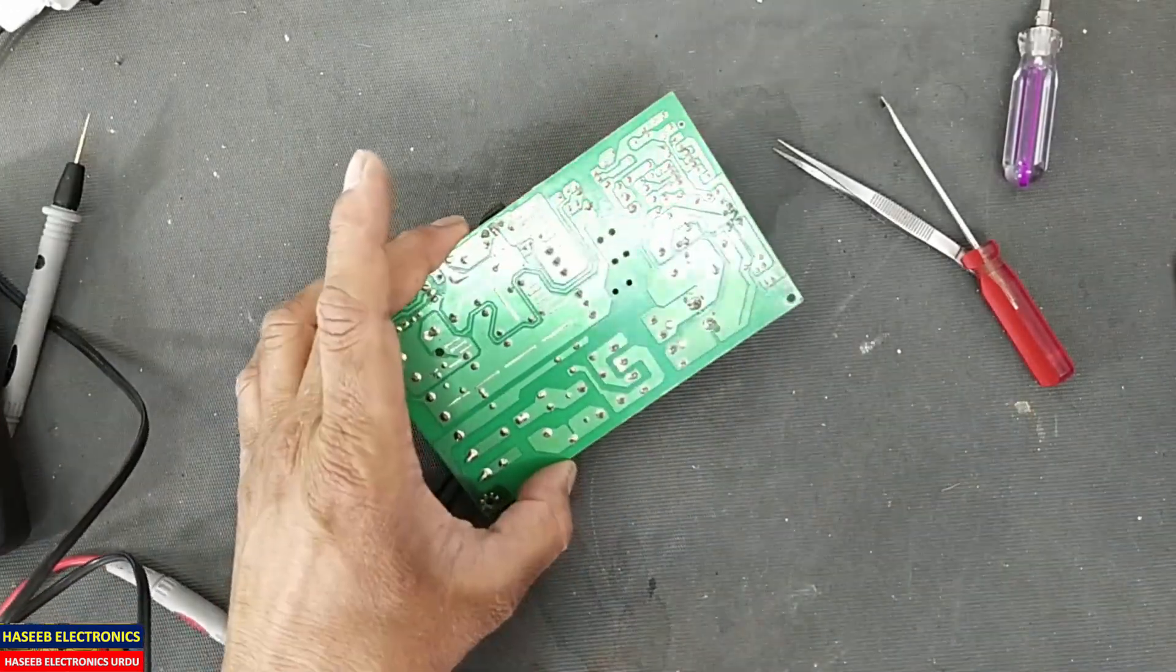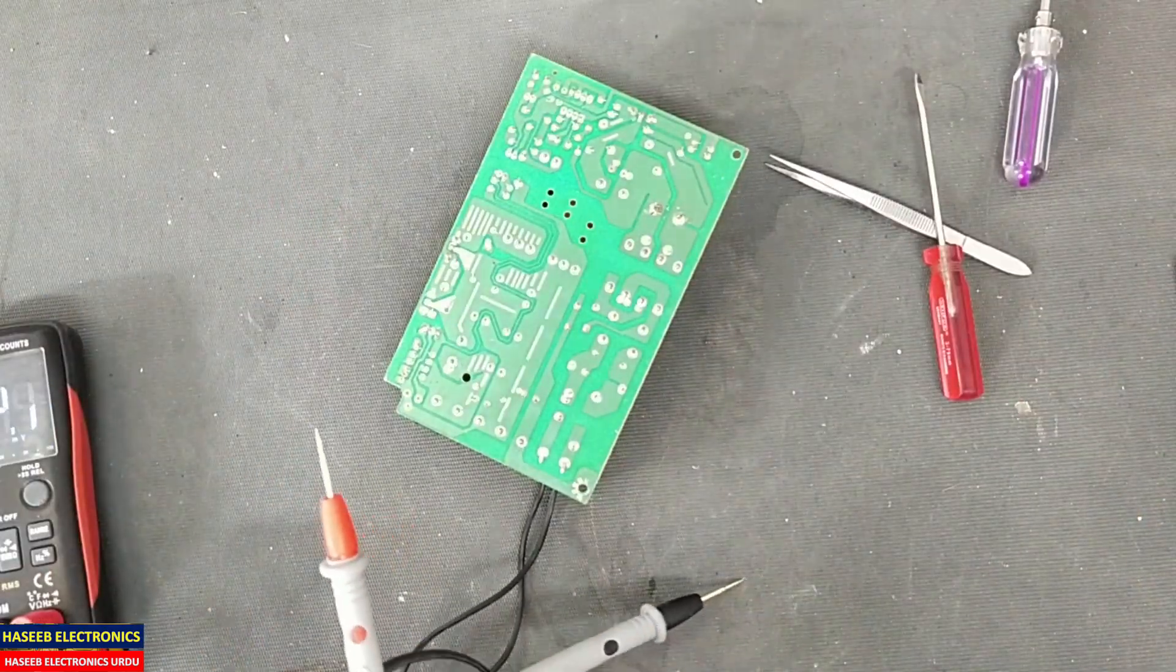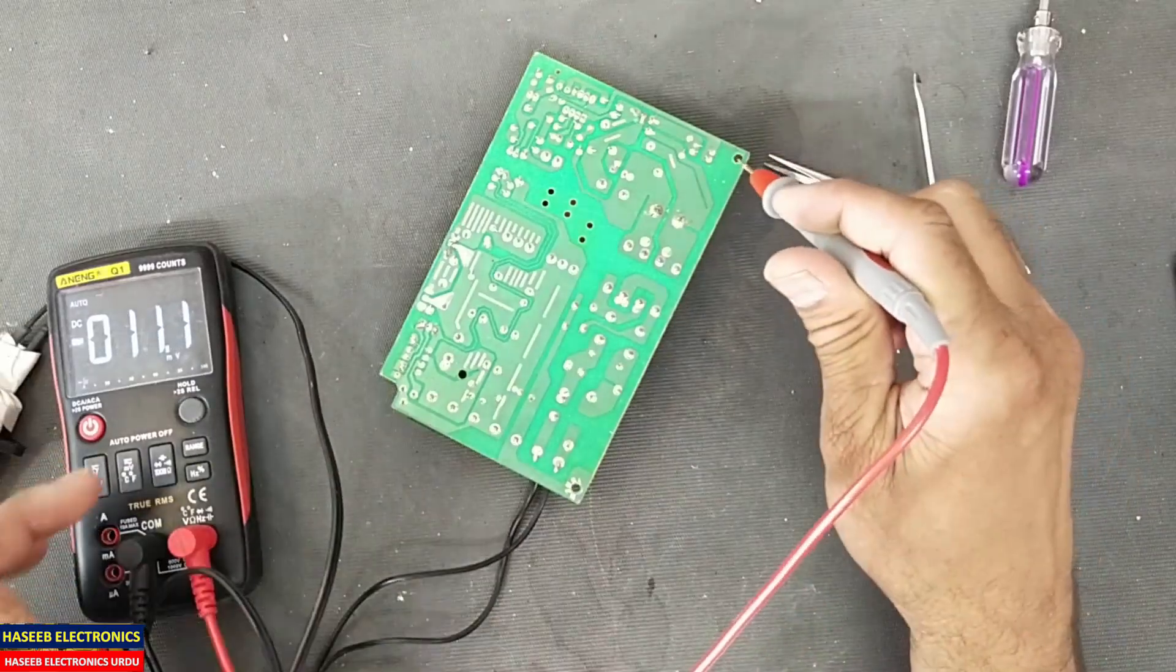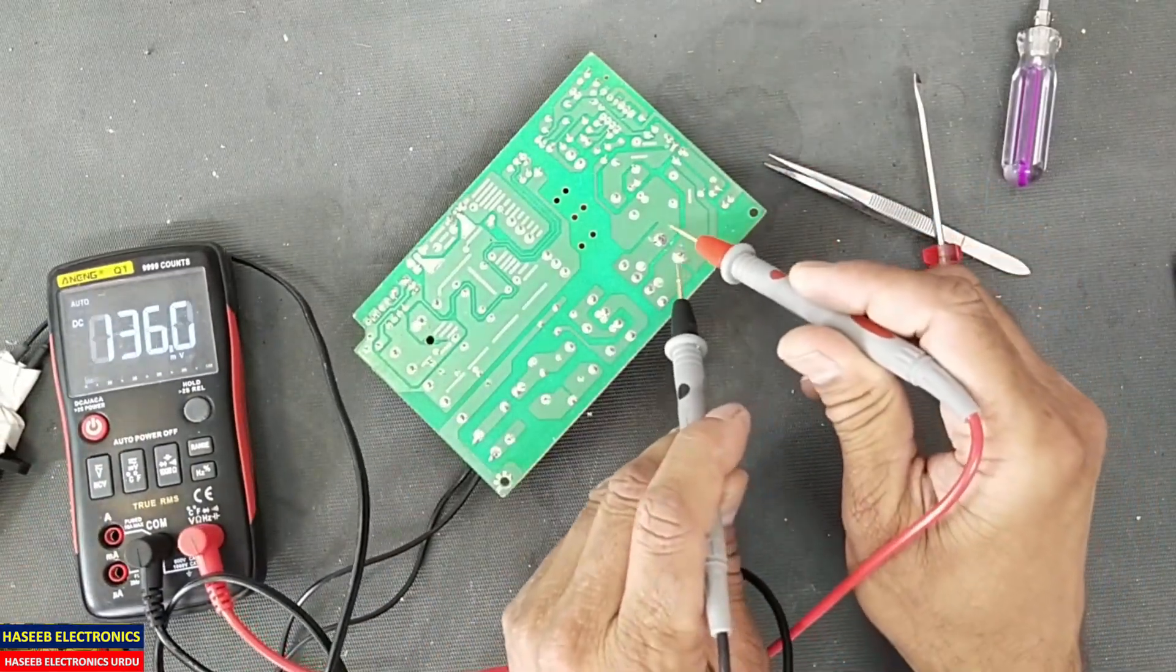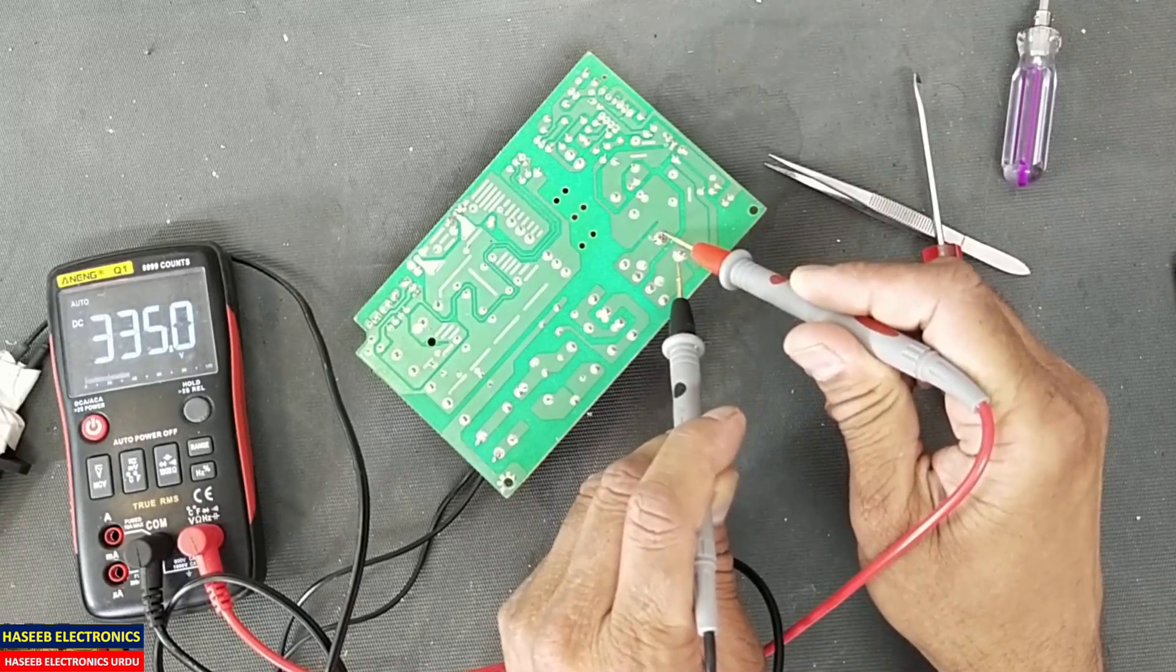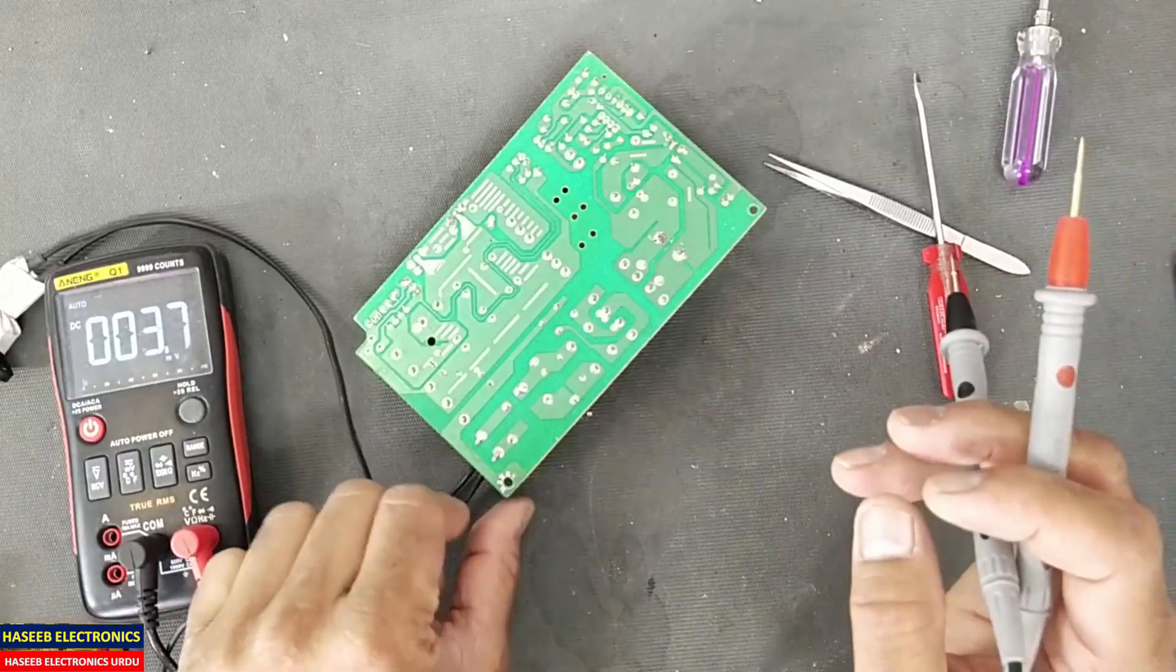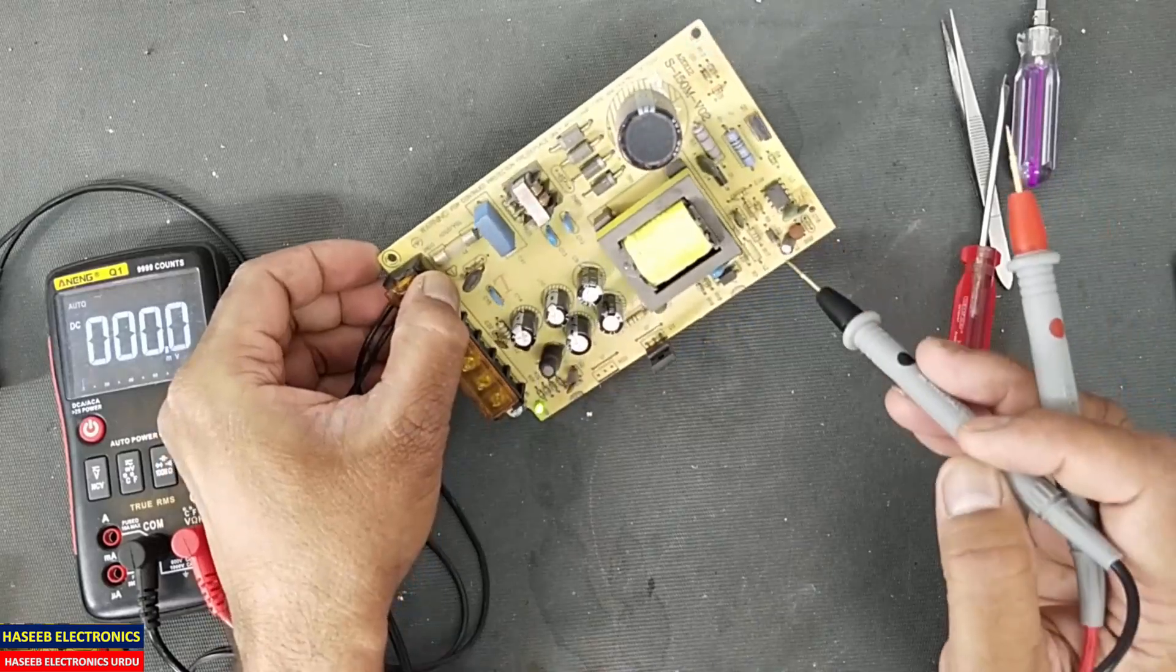Let's check power now. Let's connect power, DC voltage. Check the capacitor - it has fluctuation but no problem. Now we have to locate the reason for the fluctuation, why it is fluctuating.